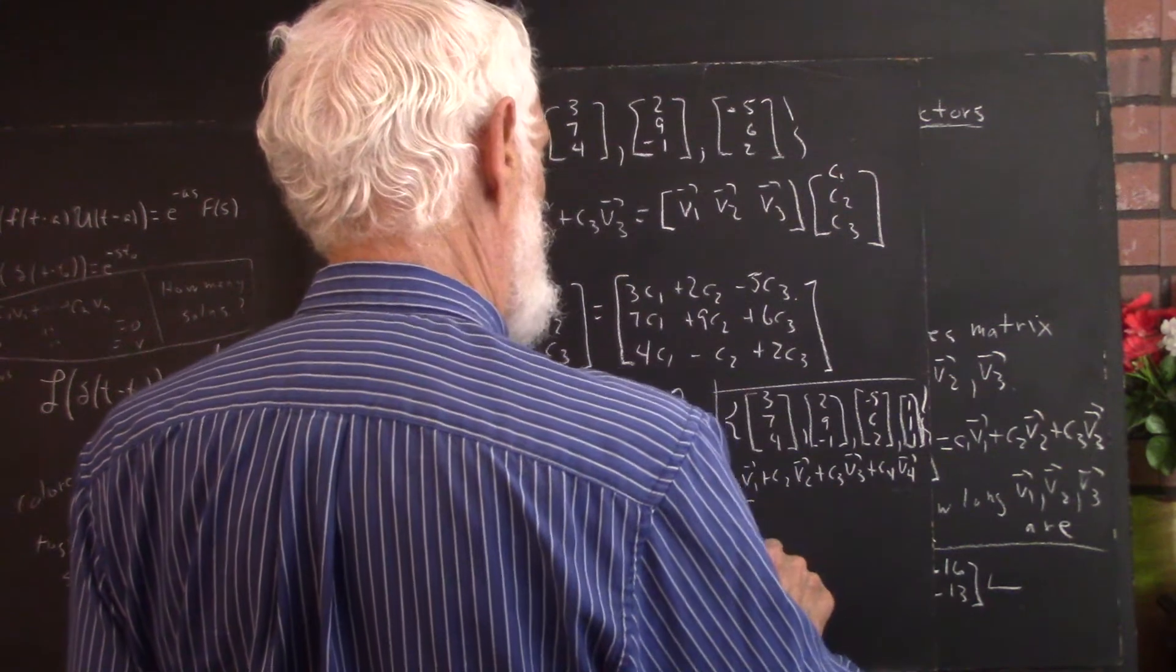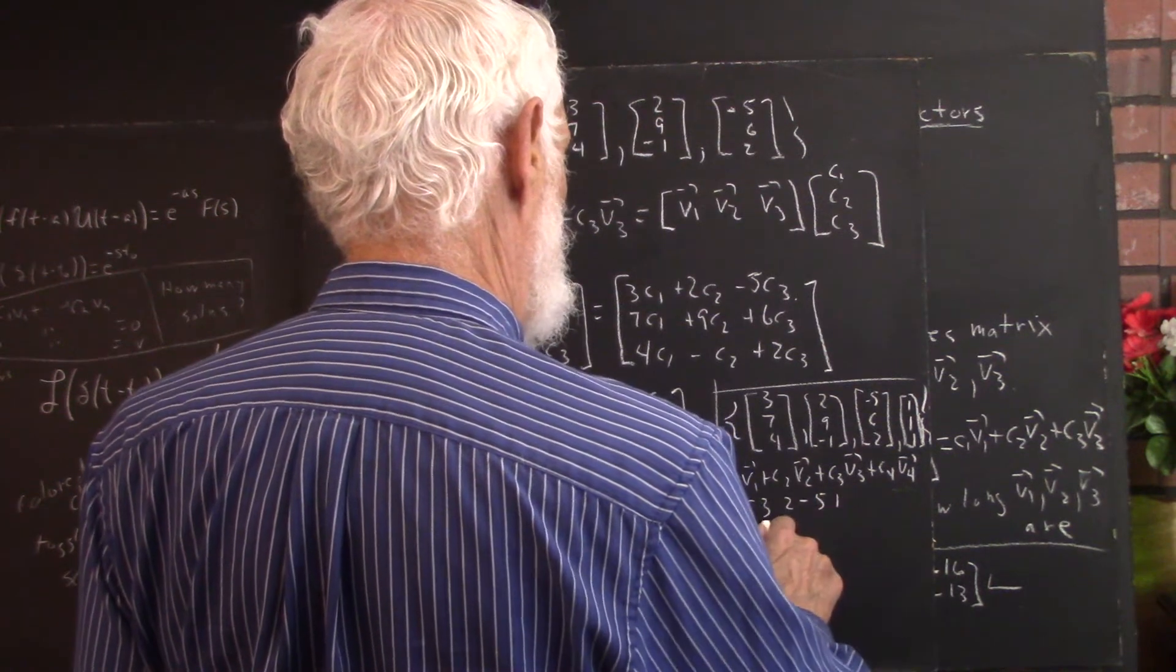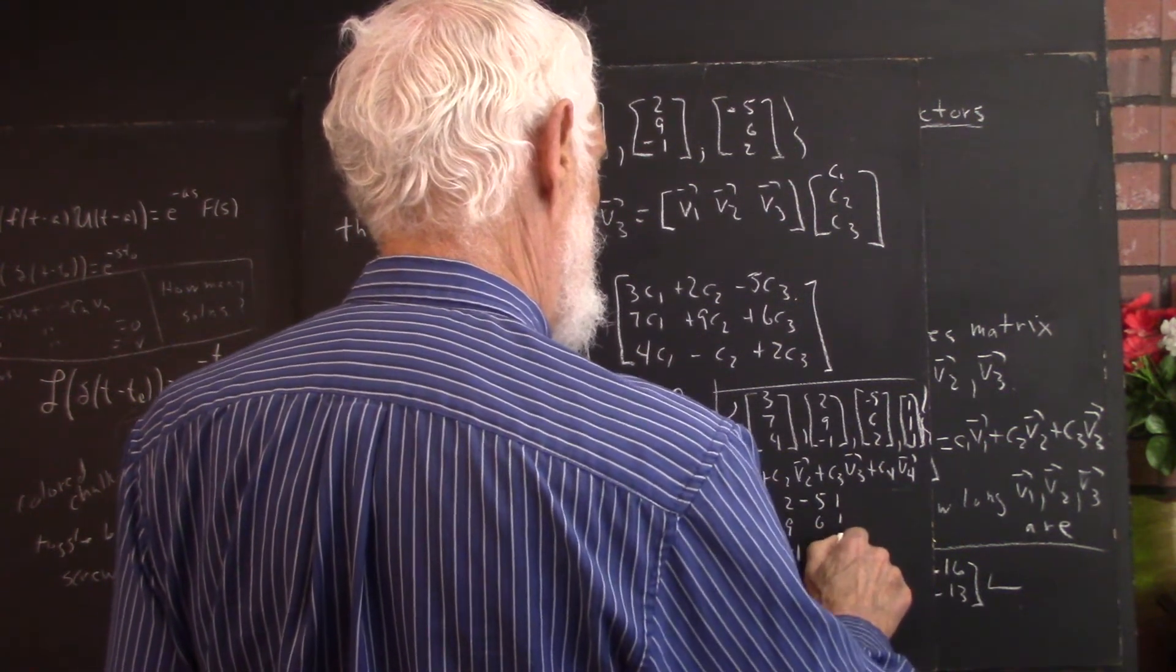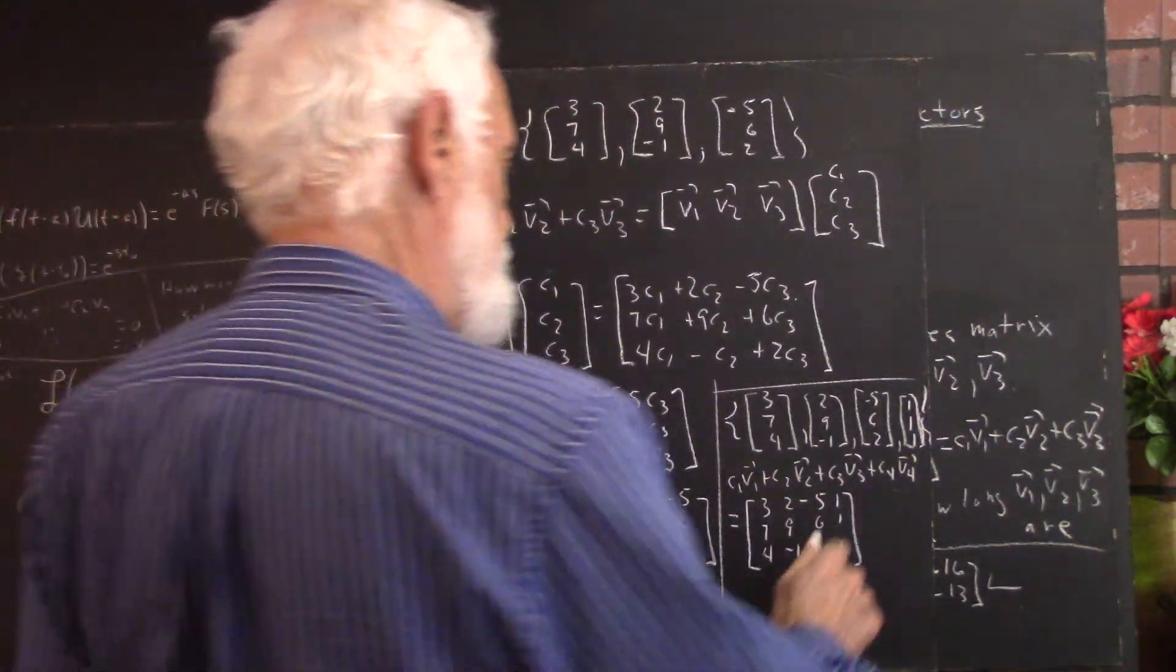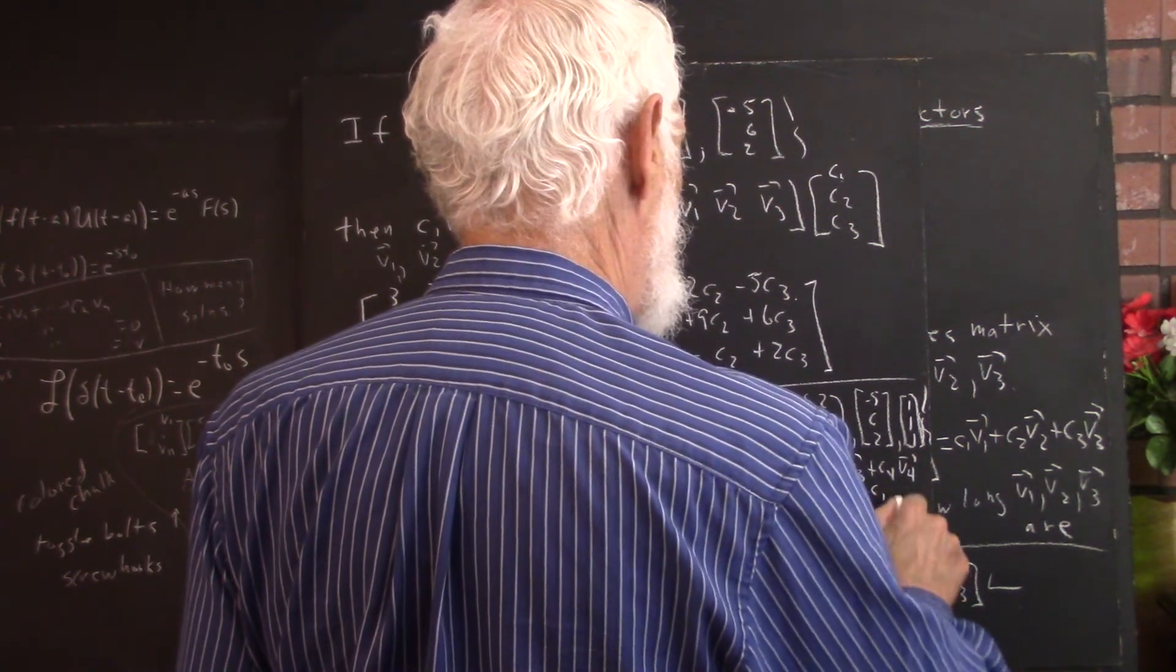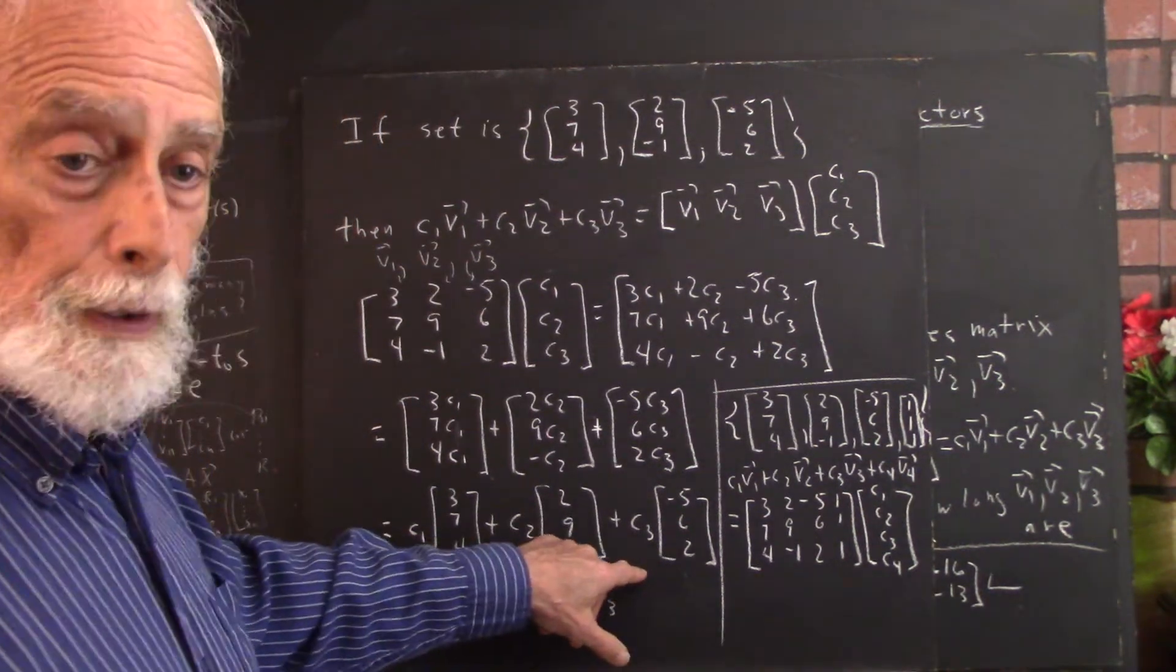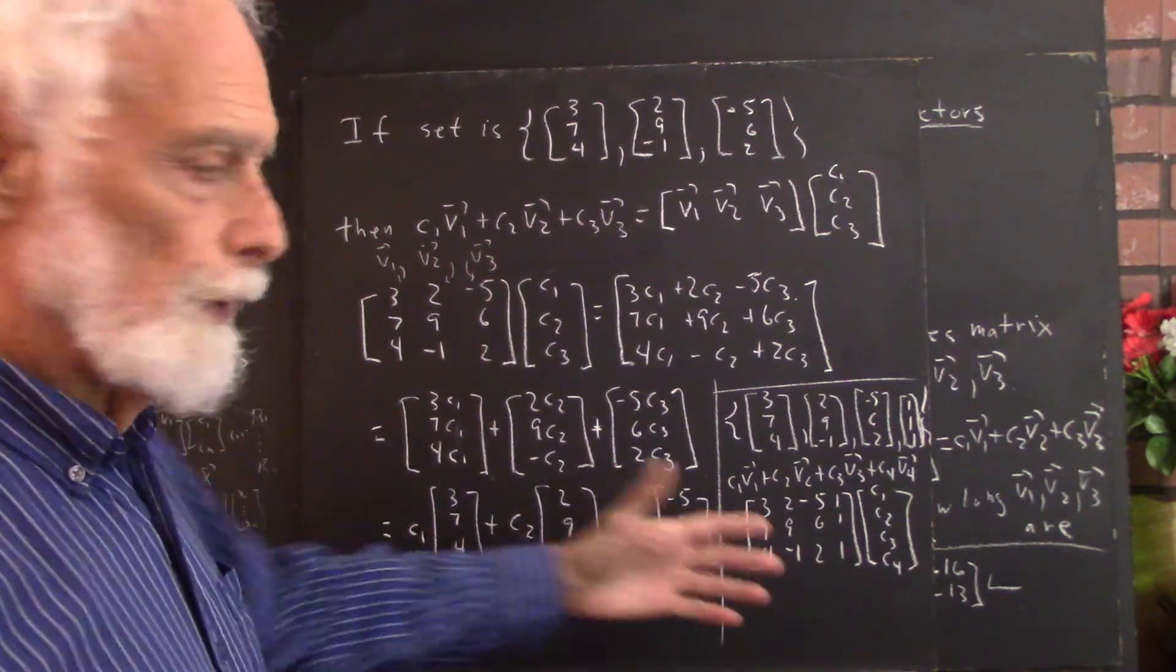But the matrix is then going to have to be 3, 2, negative 5, 1. Well, let's just go ahead and put the vectors in columns. Okay, there are four vectors now in columns. And, of course, then we have to have c1, c2, c3, c4. And you can do the multiplication, vector multiplication. You can factor out the c1, c2, c3, and now c4. And get a similar expression and convince yourself that this really is the case.